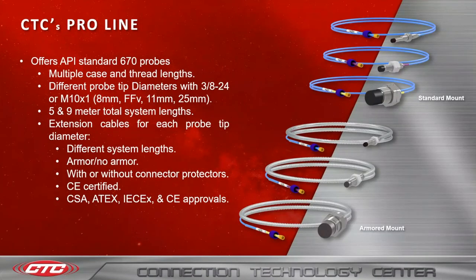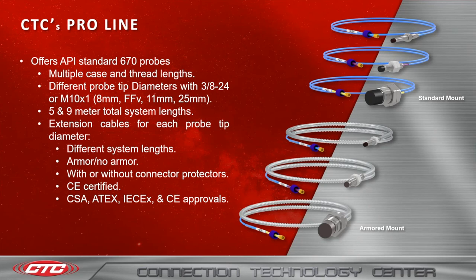That leads us into our CTC ProLine. We offer API Standard 670 probes, which come in multiple case and thread lengths with different probe tip diameters — 3/8-24 or M10. These are available for the 8 mm, 11 mm, and 25 mm systems. We also offer total system lengths of 5 and 9 meters.